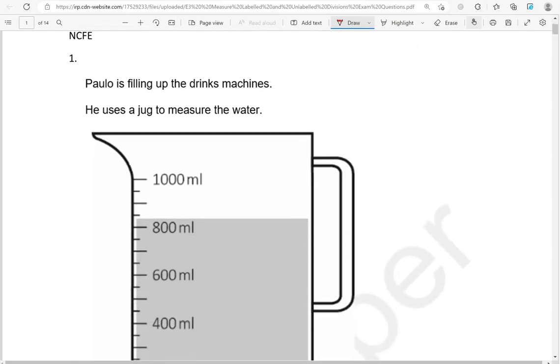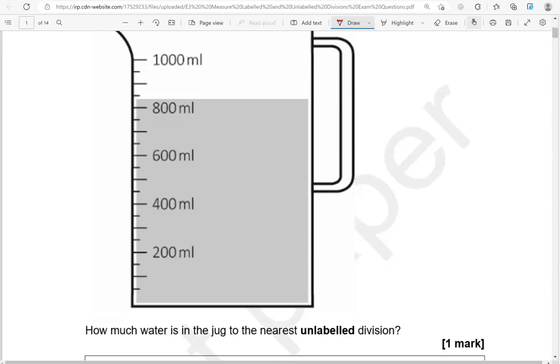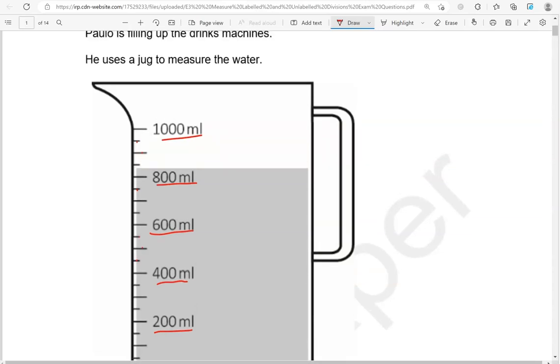Here is the first one. Paul is filling up the drinks machines. He uses a jug to measure the water. How much water is in the jug to the nearest unlabeled division? So these are the labeled divisions, whereas these ones are unlabeled. So we've got to give our answer to the nearest unlabeled division.